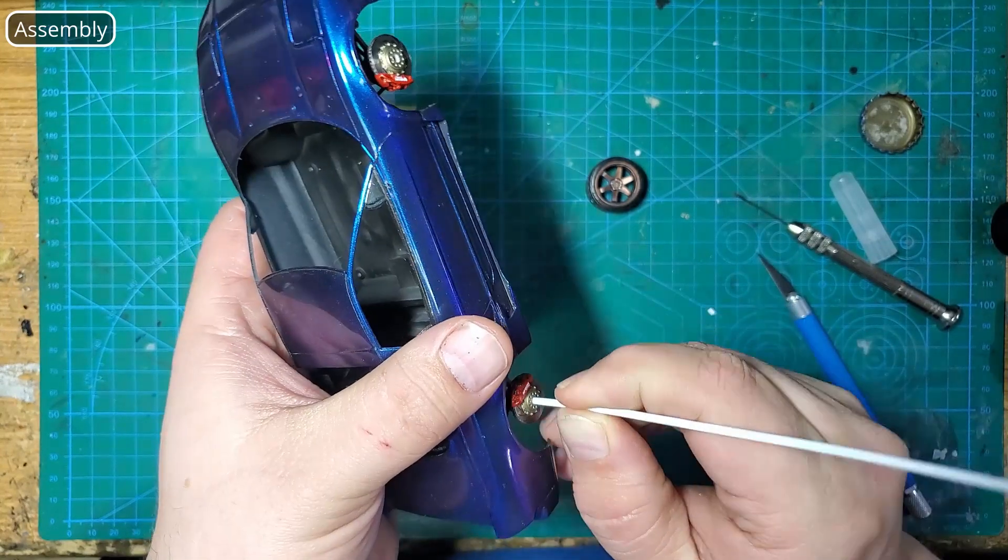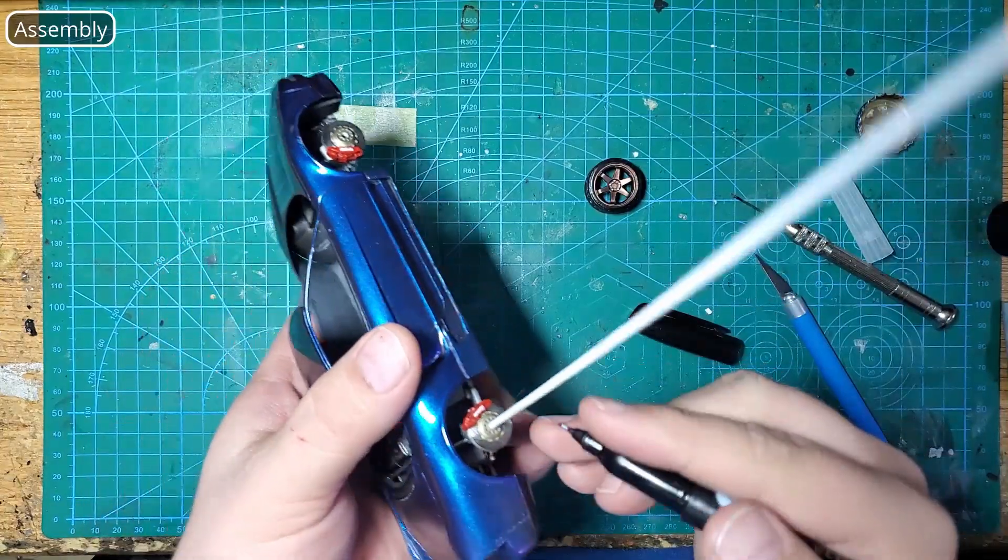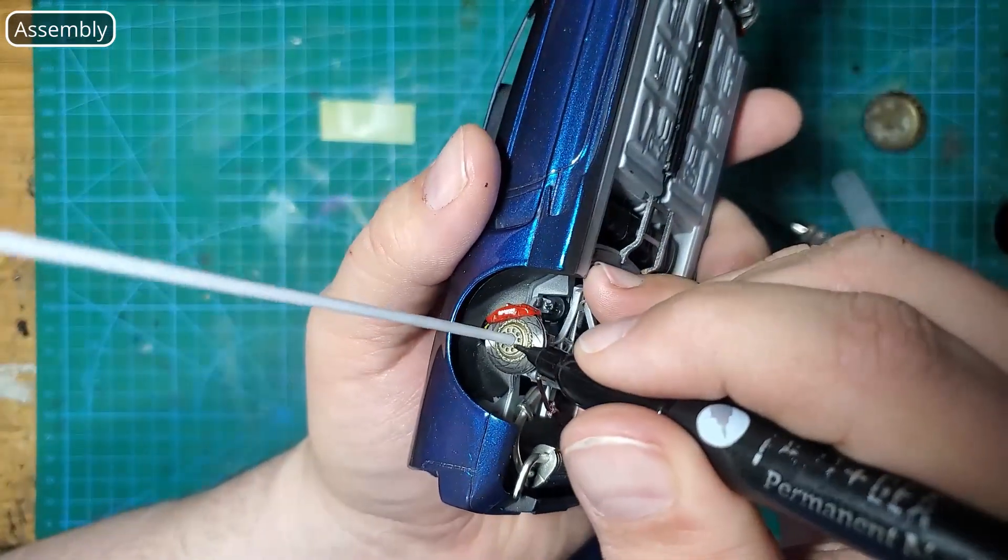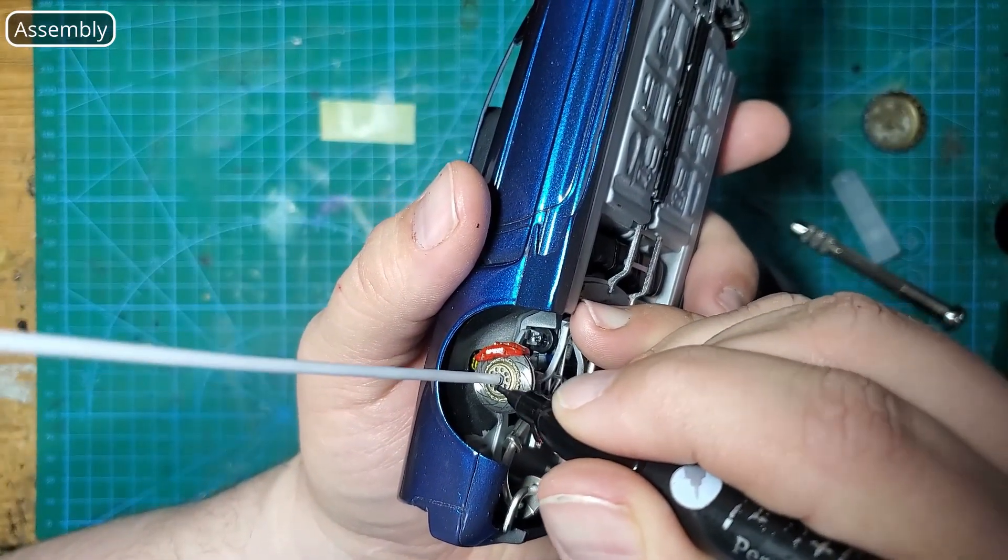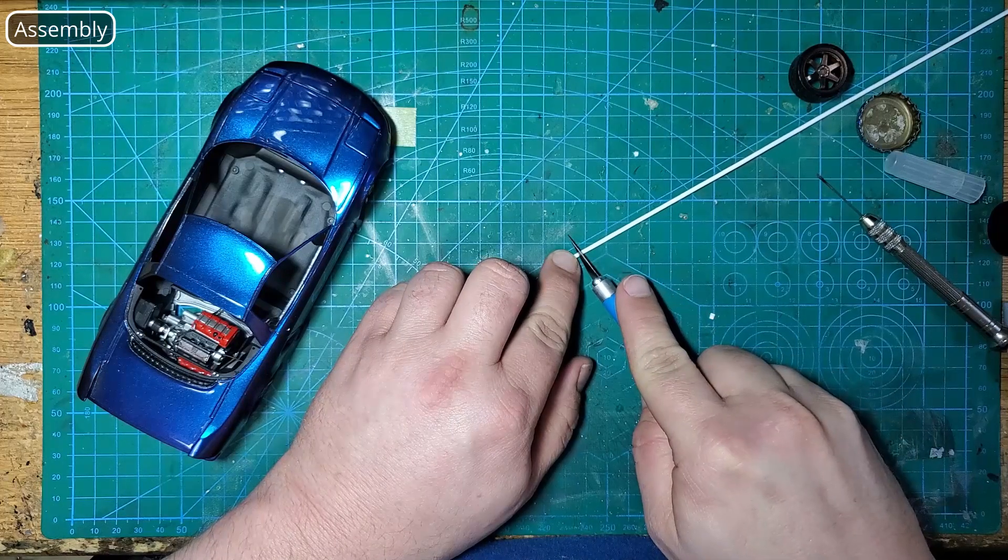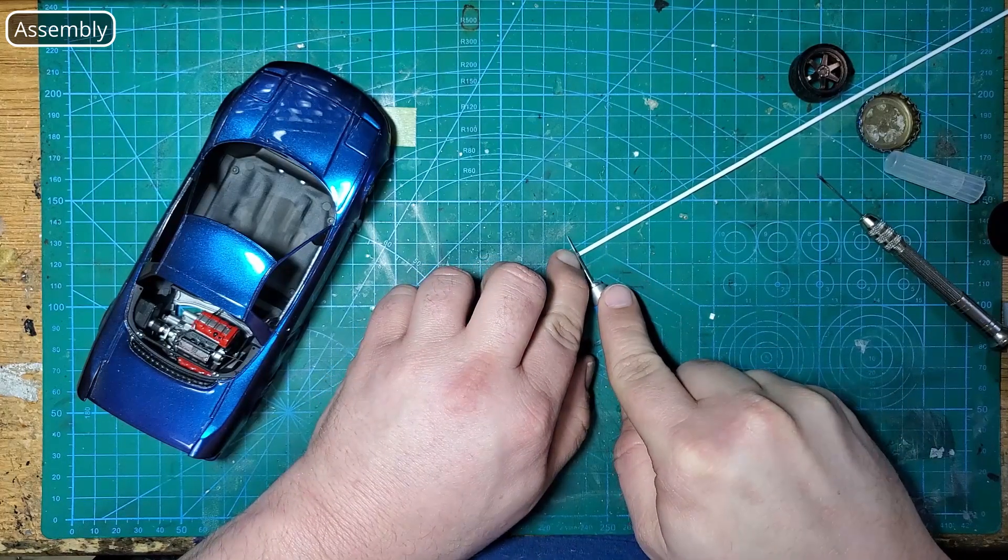My kits aren't going to competitions, they're just going to sit in my cabinet and look good so turning wheels aren't a big deal breaker for me. Now I may have been able to mess with this and drill out the lug nuts and glue in some rod in place and try to make them work but it's a lot of effort for something that personally I feel is unnecessary.